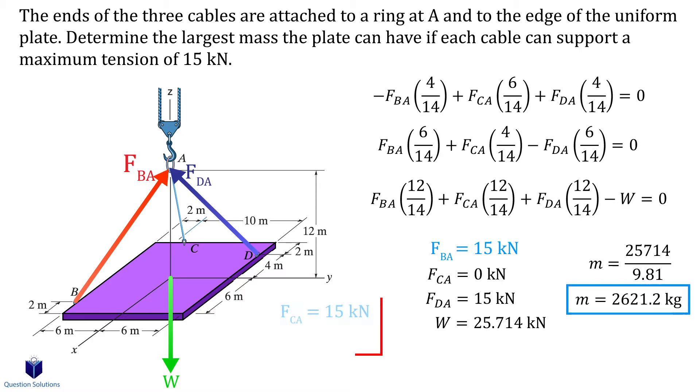But let's say we assumed cable CA to be 15 kilonewtons, then when you solve them you will see that no solutions exist. If we assumed cable DA to be 15 kilonewtons then we will get the following answers. So the same answer as when we assumed cable BA to be 15 kilonewtons.